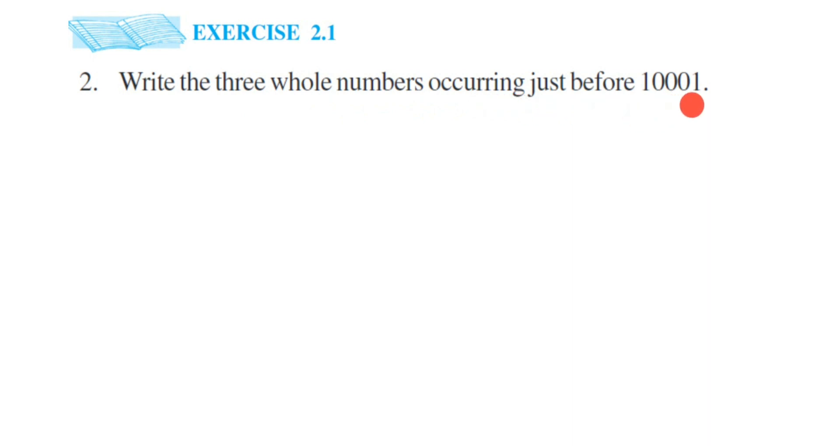In the first question, we had to write down the next three natural numbers. Now they are asking us to write down whole numbers occurring before 10001. Since they are asking for before, we have to subtract one from this number to get the previous number.